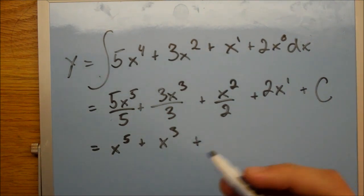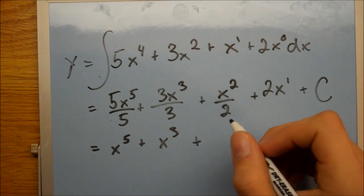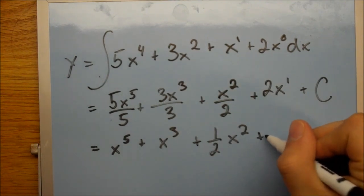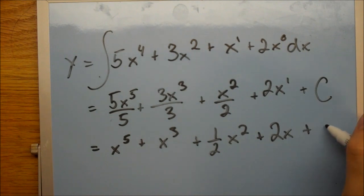So our final answer is going to be x to the 5th plus x cubed plus 1 half x squared plus 2x plus c.